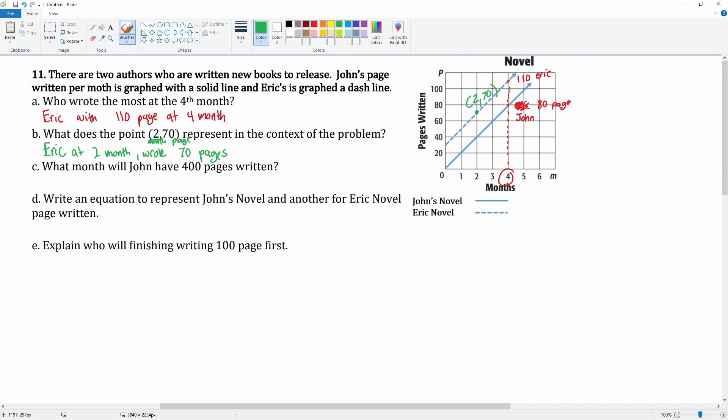It says, 'What month will John have 400 pages written?' Well, we know John is right here. It took John five months right here—(5, 100)—so it took John five months to do 100 pages. So if we want 400 pages, you see how I'm just making a chart. I